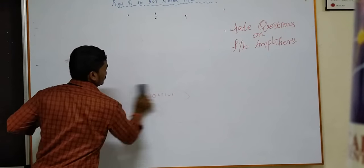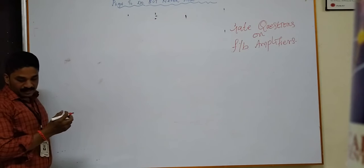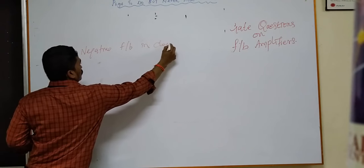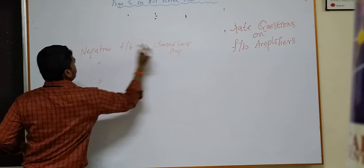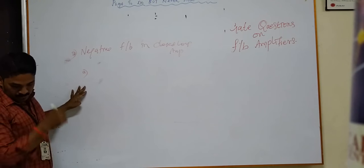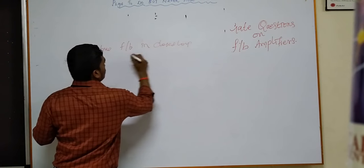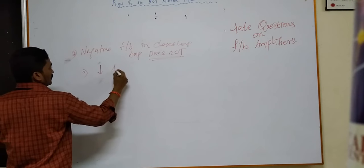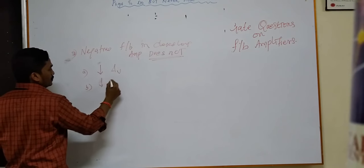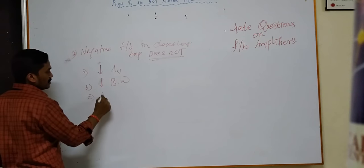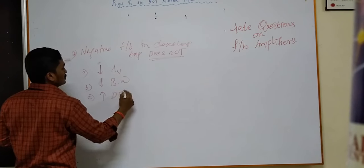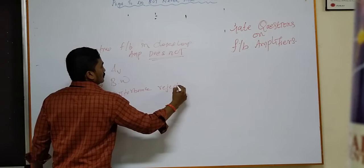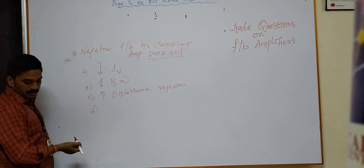The second question is about negative feedback in a closed loop amplifier. Option A: does not reduce gain. Option B: reduces bandwidth. Option C: improves disturbance rejection. Option D: reduces sensitivity to parameter variation.